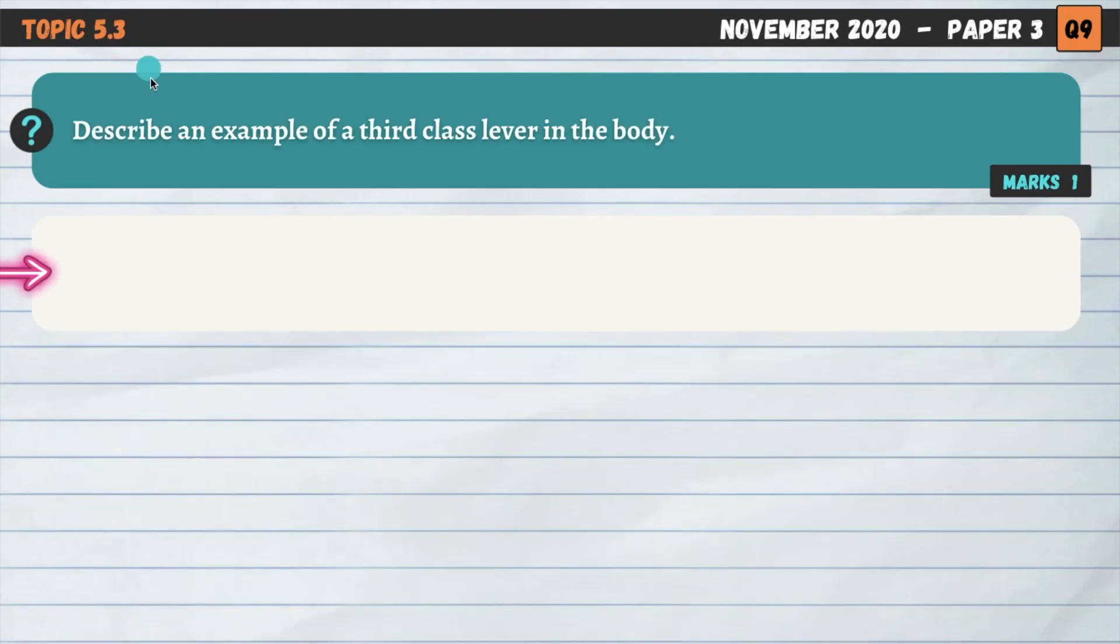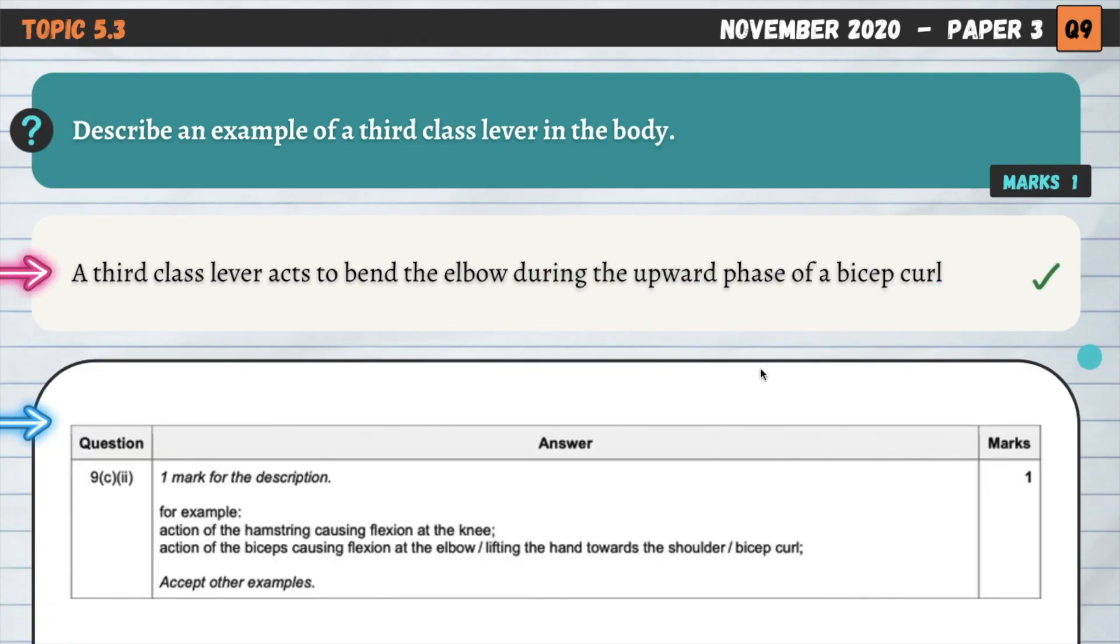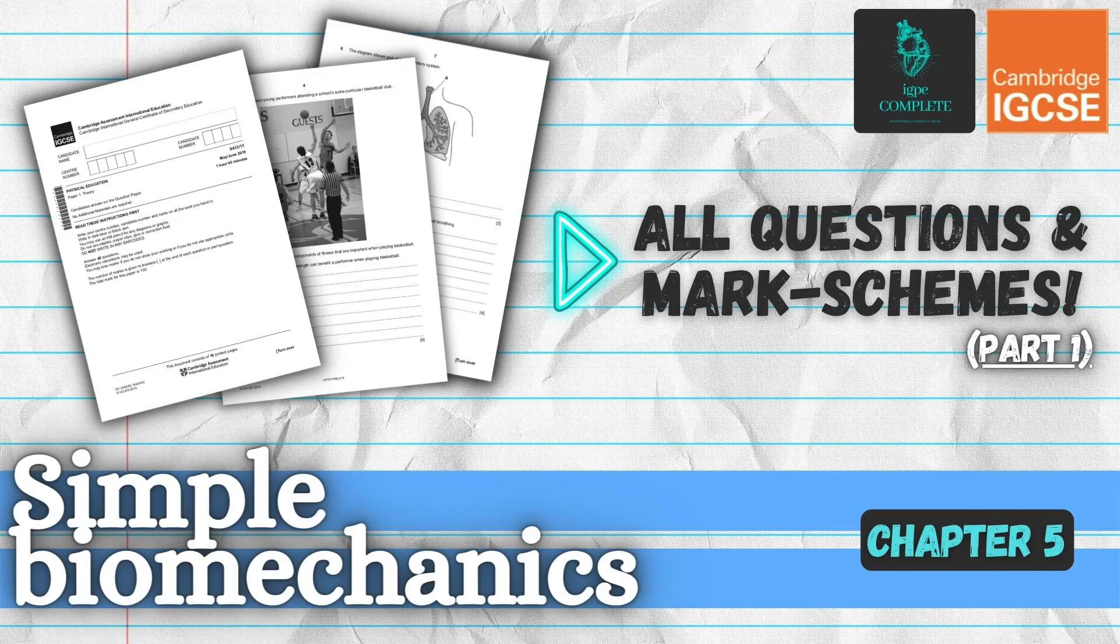Next question, 5.3. Describe an example of a third class lever in the body. This question's already come up again, once for the second class lever. So we can see some real repeats here for biomechanics. And there's not that many questions actually that they ask on this topic. So the more of these videos that you watch, the more practice you have on these questions, the more comfortable you're going to be when you come to your final exam. A third class lever acts to bend the elbow during the upward phase of a bicep curl. That's my example in the body. So at the elbow during a bicep curl, which has been included in the mark scheme here. There's a couple of other examples you could have included. And that was the final question for today.